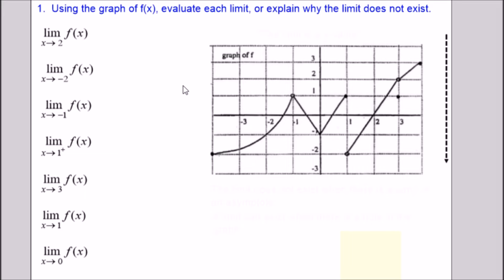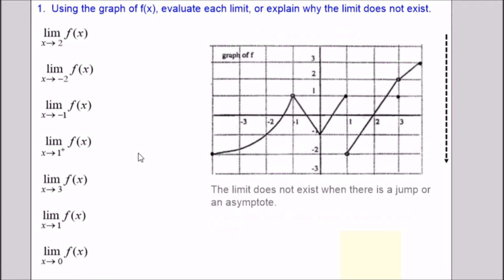Hi, my name is Vincent and today I want to show you all how to determine limits and continuity of a function from a graph. We have a graph of f(x) here and we want to determine these limits. A limit does not exist when there's a jump in the graph or when there's an asymptote.